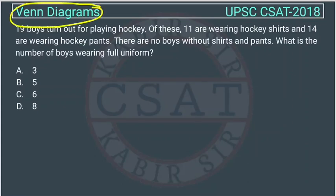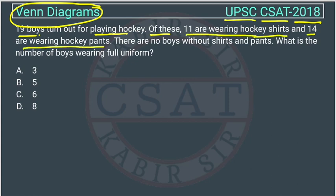This is a Venn diagram question asked by UPSC in their CSAT paper of 2018. 19 boys turn out for playing hockey. Of these, 11 are wearing hockey shirts and 14 are wearing hockey pants. There are no boys without shirt and pants. What is the number of boys wearing full uniform?